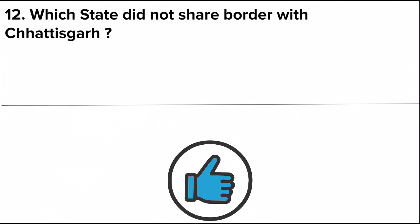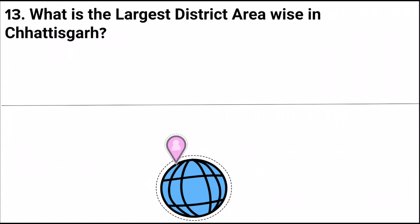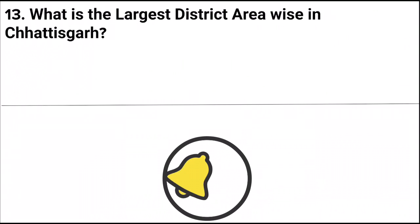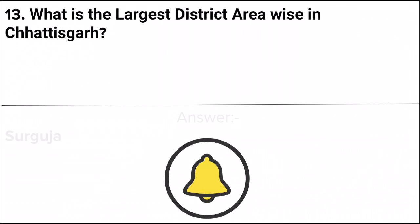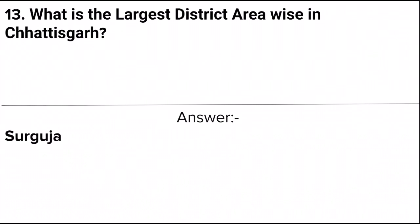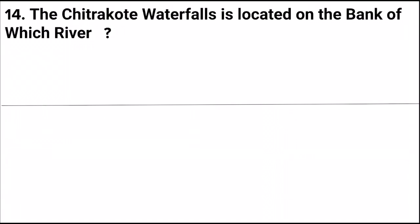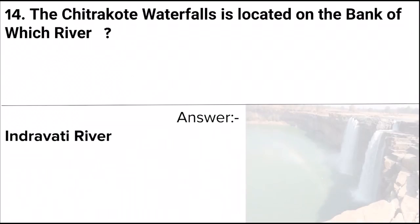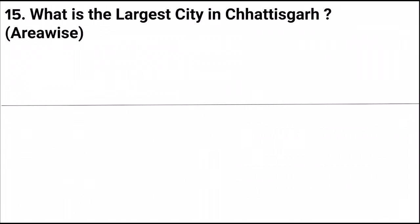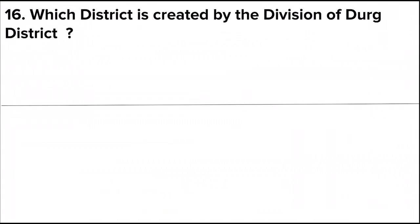Next question: Which state does not share a border with Chhattisgarh? Next question: What is the largest district area-wise in Chhattisgarh? Answer: Surguja. Next question: The Chitrakoot Waterfalls is located on the bank of which river? Answer: Indravati River. Next question: What is the largest city in Chhattisgarh area-wise? Answer: Raipur.